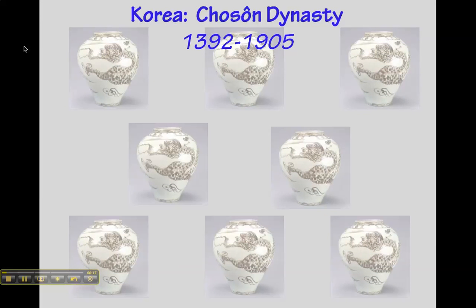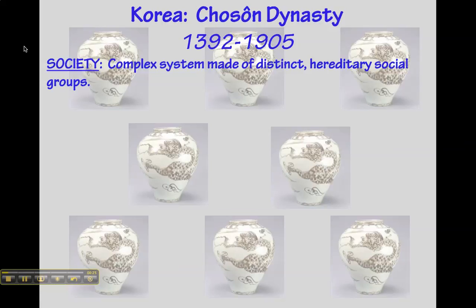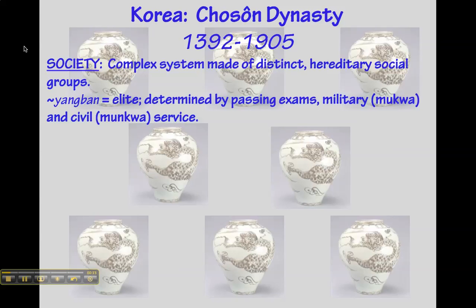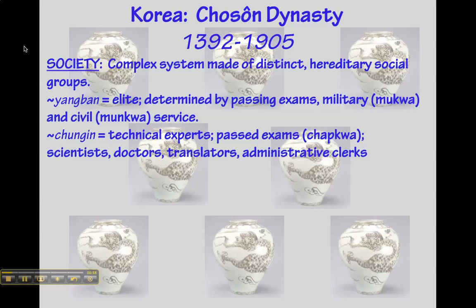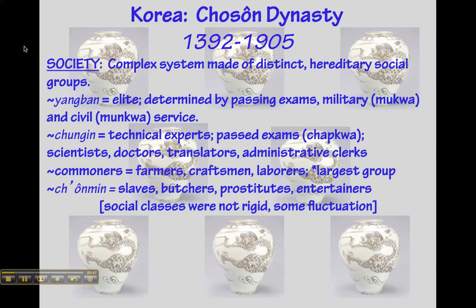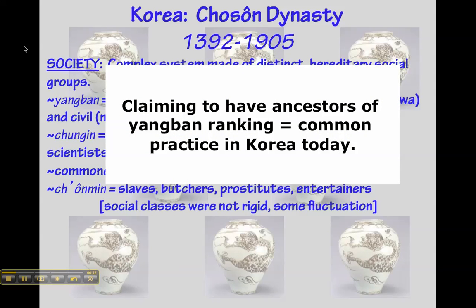We are going to rewind to the 1800s when Korea was ruled by the Joseon dynasty, and Korean society was made up of distinct social class groups that were largely based on the result of one's performance on exams — either military, civil service, or technical. While it was most common for someone to stay in the same social class as their parents, there was some fluctuation, and the social classes were not rigid. Even today, a common practice in Korea is to claim to have ancestors of Yang Ban ranking.